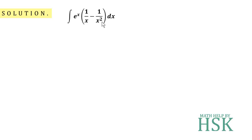It can be simplified as a product of two functions: first, the exponential function e^x, and second, the sum of two rational functions, 1/x minus 1/x².